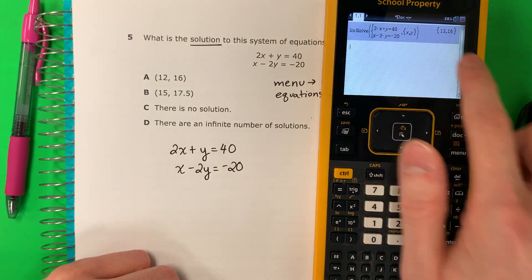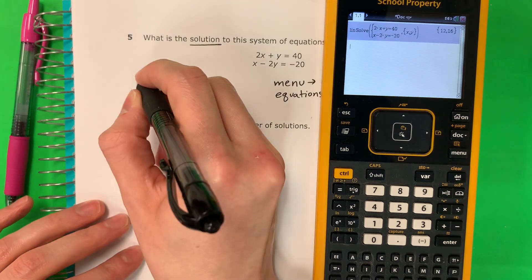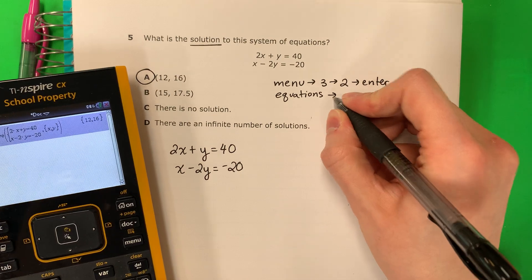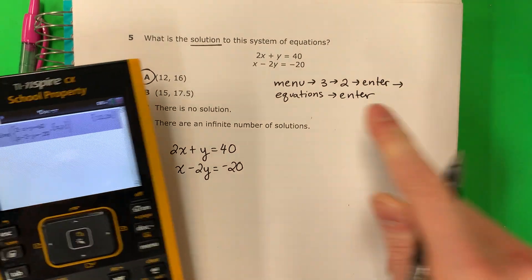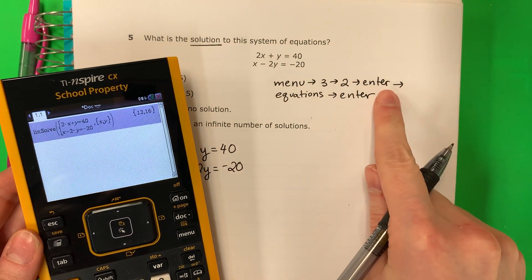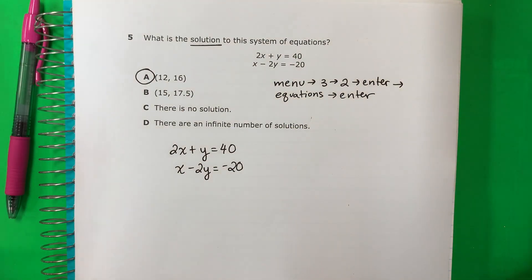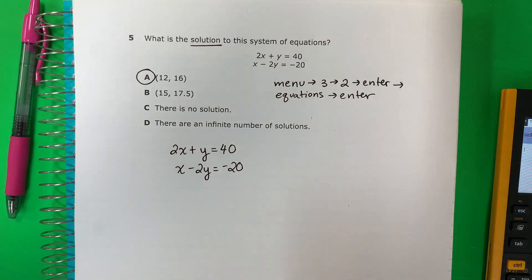And this is your answer 12, 16. 12, 16 is my answer. So it's menu 3, 2, enter. Put the equations and then push enter. So that's how you do it with the calculator. You can do it on the calculator if you want on the test.